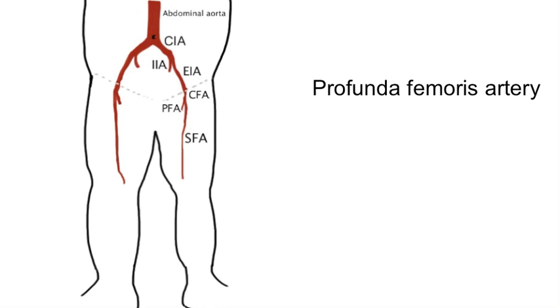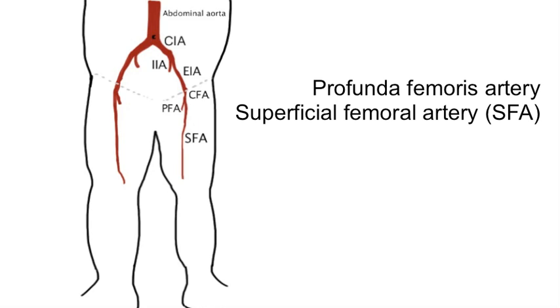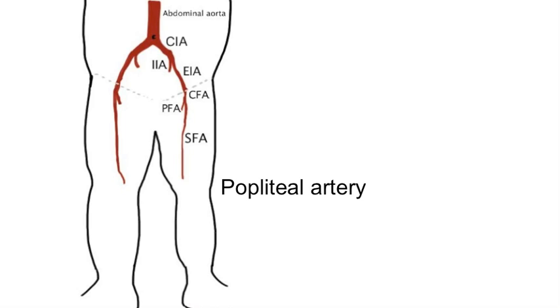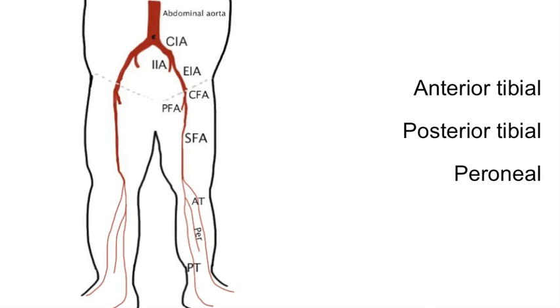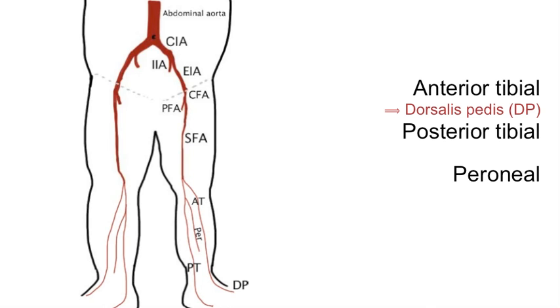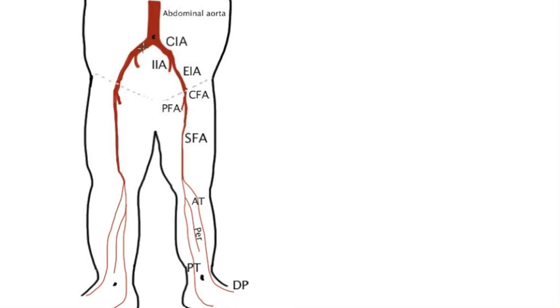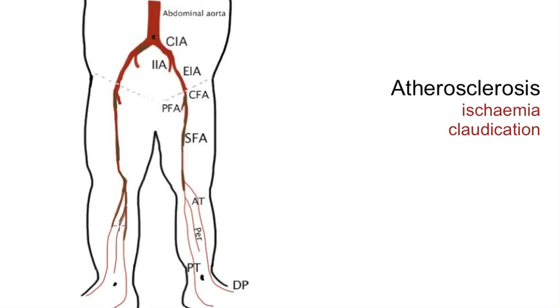This quickly divides into the profunda femoris artery and the superficial femoral artery or SFA. The profunda femoris is an important collateral blood supply for the lower limb. Once the SFA passes through the adductor hiatus, it is called the popliteal artery and lives in the popliteal fossa behind the knee. It then trifurcates into anterior tibial artery, posterior tibial artery and perineal artery. The anterior tibial artery becomes the dorsalis pedis in the foot and the posterior tibial artery can be palpated midway between the medial malleolus and the tip of the calcaneum. When we talk about arterial disease of the lower limb, we're essentially talking about atherosclerosis in these vessels, leading to ischemia, claudication and tissue loss.